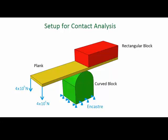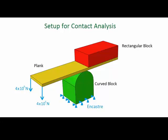Two concentrated forces are applied on the free end of the plank pushing it downward so that it bends around the curved block. At the same time, the rectangular block holds the top surface of the plank flat, preventing it from arching upwards. The dimensions of the parts are displayed in the figure.